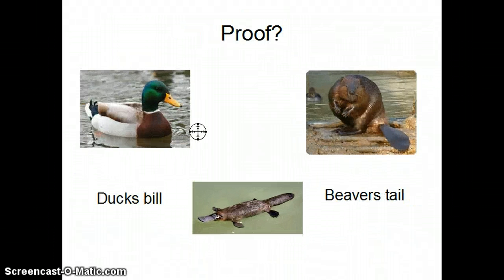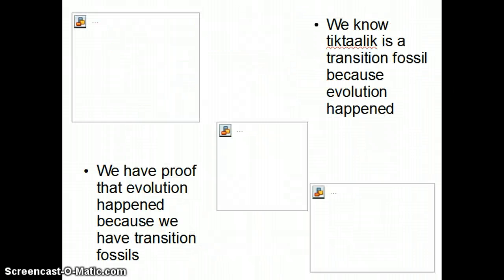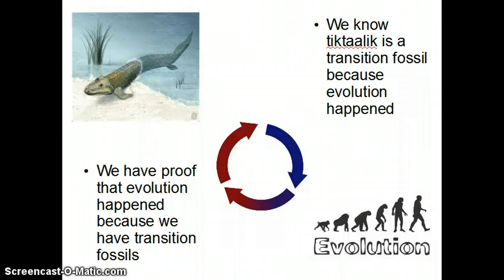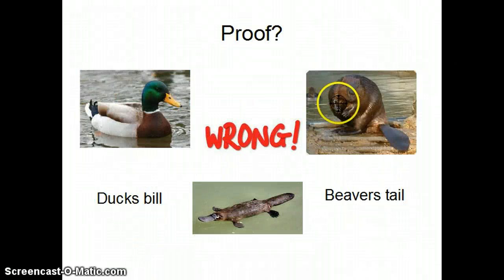You cannot base science on assumption — otherwise it's not science. You cannot first assume that evolution happened and then try to prove that evolution happened. Your results are going to be skewed, you're going to have circular reasoning, it's not going to work, and your results are going to be wrong.